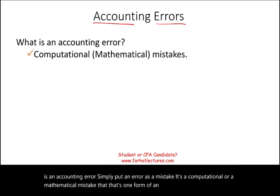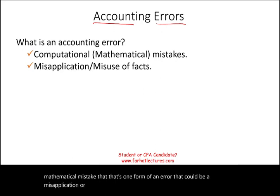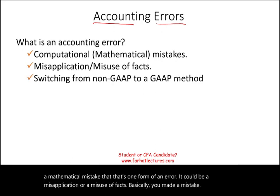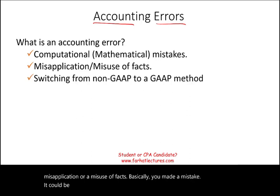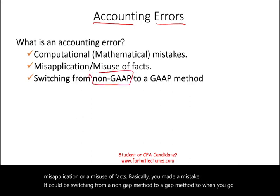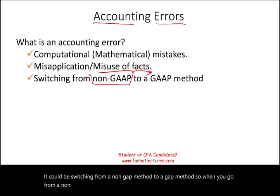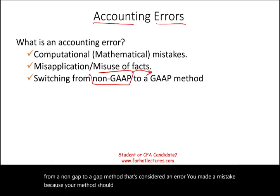An error could be a misapplication or a misuse of facts — basically, you made a mistake. It could also be switching from a non-GAAP method to a GAAP method. When you go from a non-GAAP to a GAAP method, that's considered an error, because your method should have been GAAP-accepted and it was not.